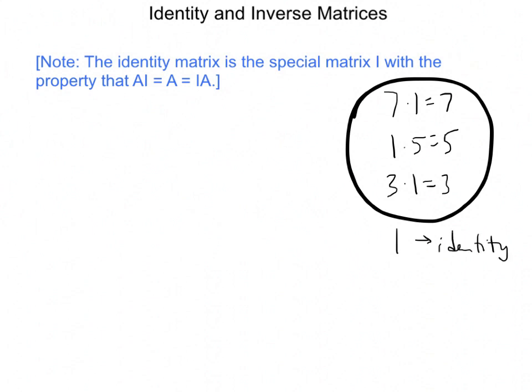Because it's a number that I can multiply with any other number and get the original number. So this lesson, the first part is about the identity matrix. And so this identity matrix is going to be a matrix that has the property that if you multiply it by any other matrix, you're going to get the original matrix back.